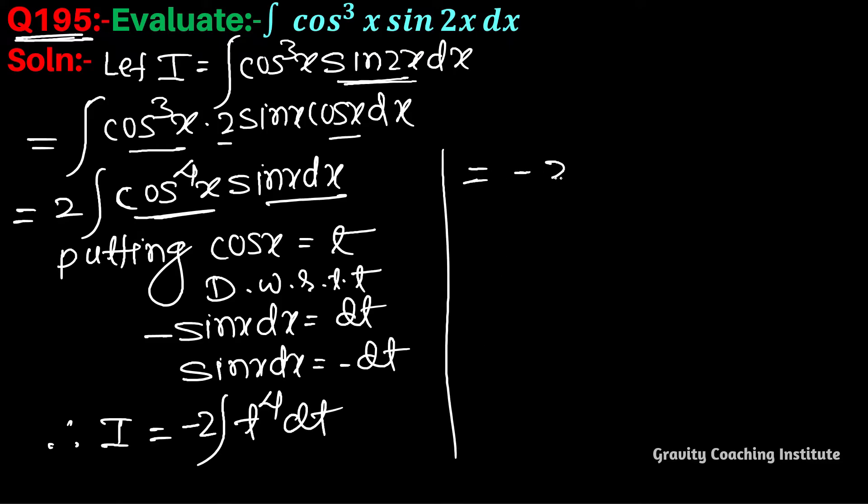Minus 2 into t⁵ upon 5 plus c equals minus 2/5 cos⁵x plus c.